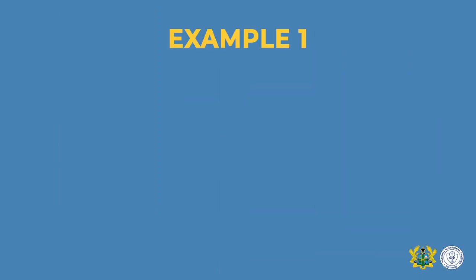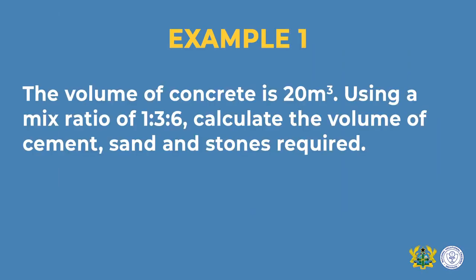I would like us to take a few examples. Example one: a volume of concrete of 20 cubic meters should be produced using a mix ratio of 1:3:6. Calculate the volume of cement, sand, and stone required. When you look at the question critically, you have been given the total volume of concrete. This makes your work easier. You must also know the type of ratio being given — from the question, we know it is mass concrete.